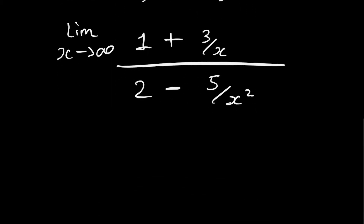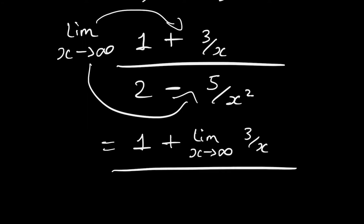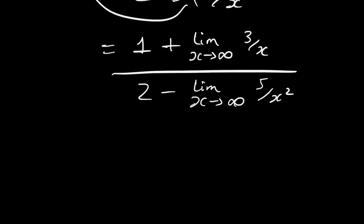After this, we substitute the limits into each term. This becomes: 1 plus the limit as x approaches infinity of 3 over x, divided by 2 minus the limit as x approaches infinity of 5 over x squared.